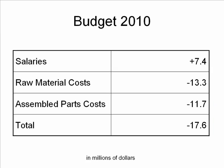Here's their slide, and what they're trying to do is explain the difference between the budget for the previous year 2009 and the budget for the upcoming year 2010. There are three major components that contribute to the overall difference, and they have used a table — very typical, likely copied from Excel, because that's typically where we do financial calculations.